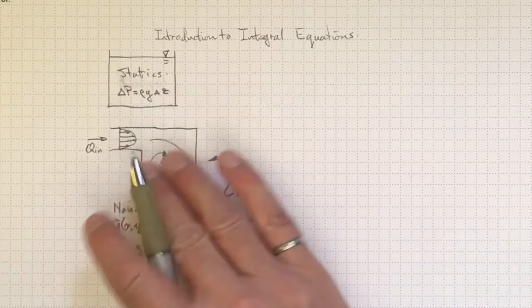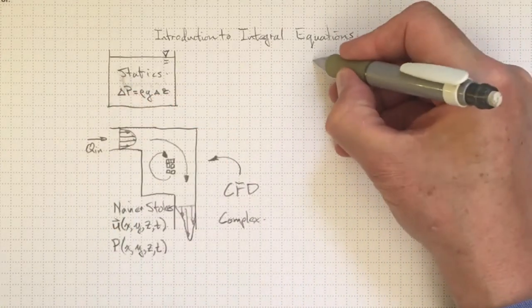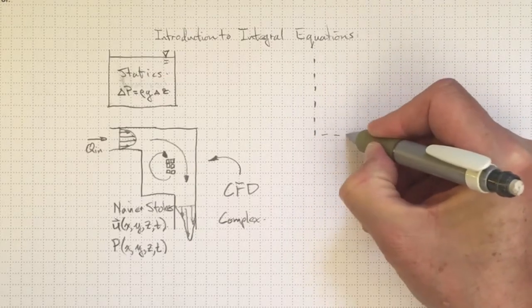What if we could ignore the details of what was happening inside there and treat it instead just as a black box, like this one?